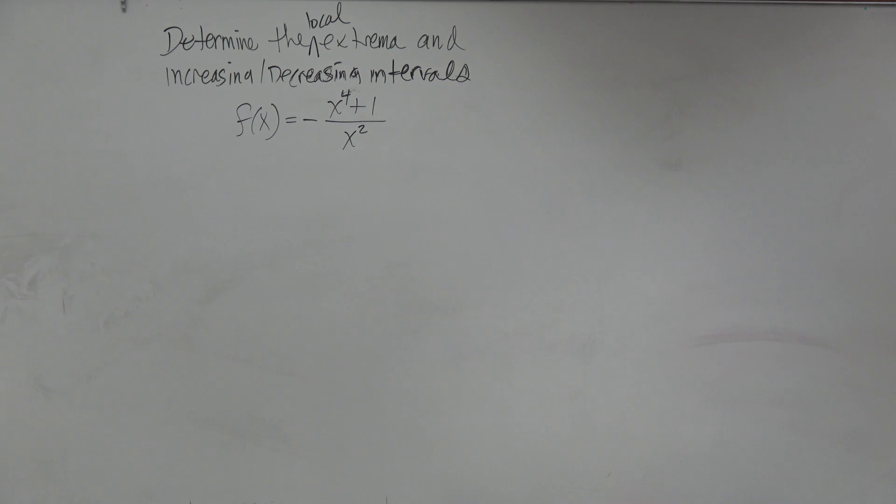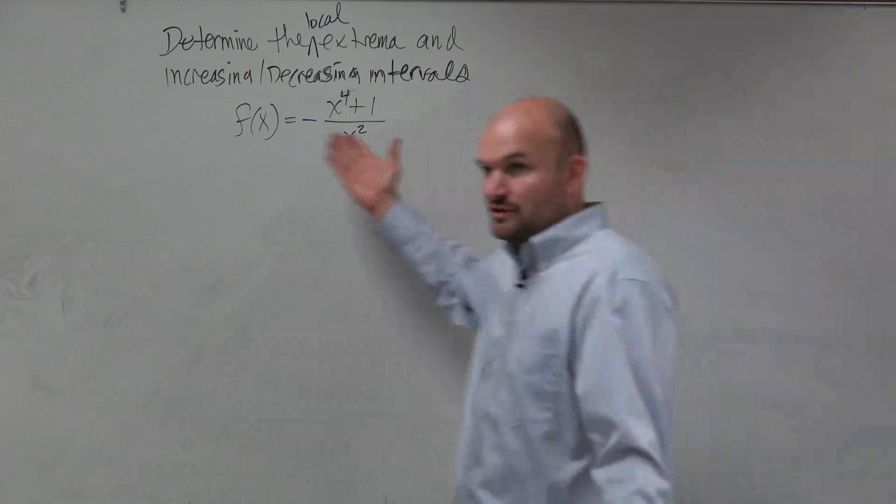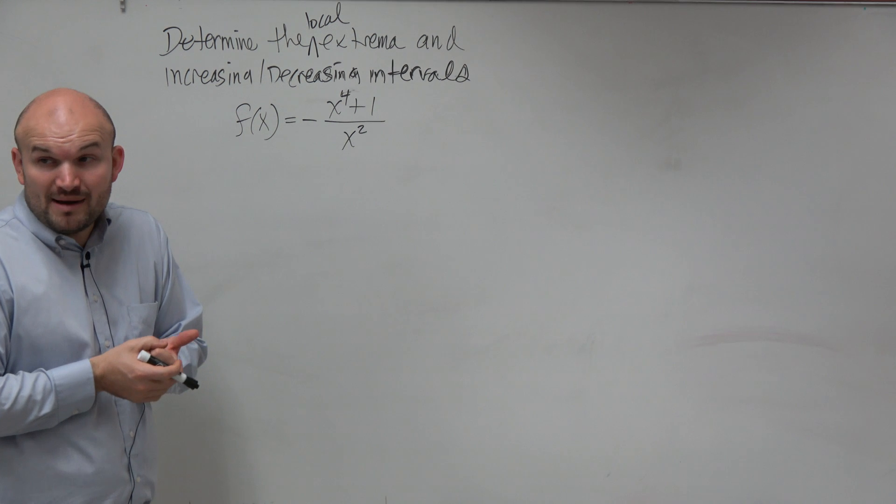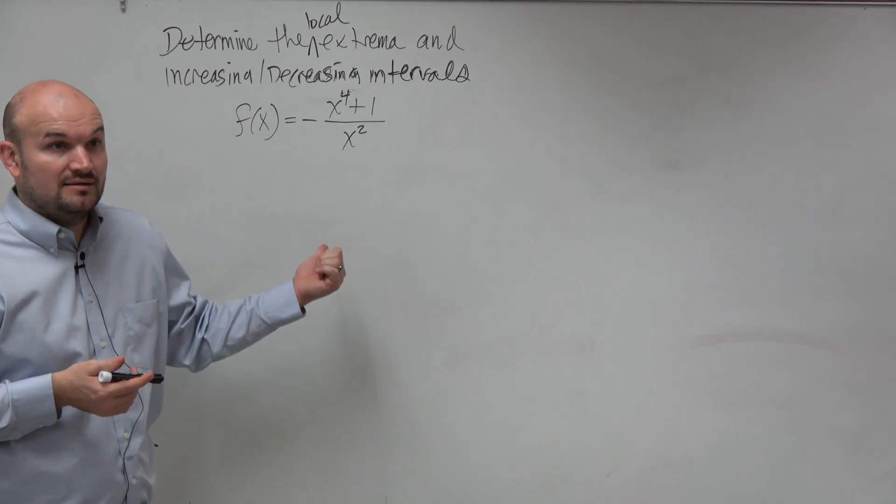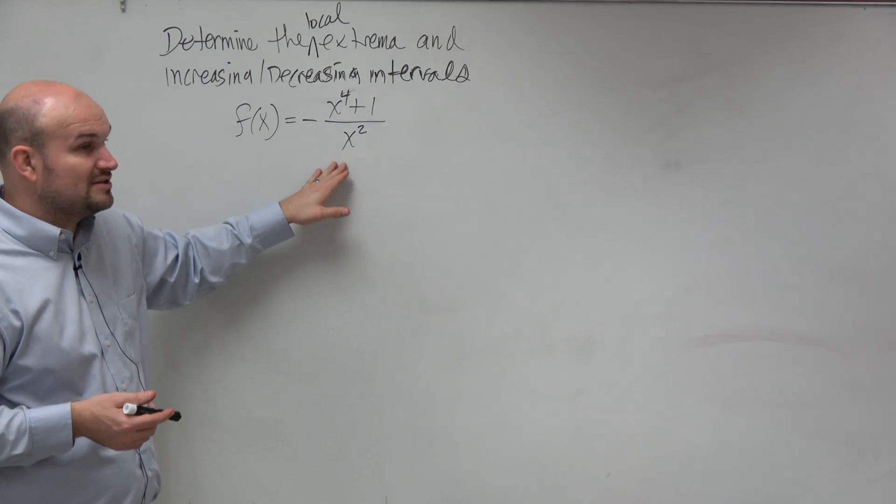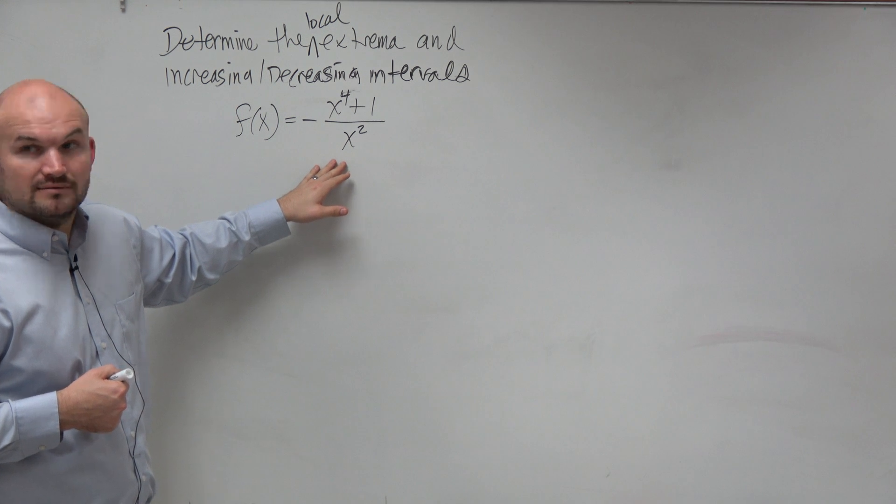So in this example, we do not have a continuous function. That is important, because if we don't have a continuous function, that means we have an asymptote or a hole. Obviously, you guys know that this is an asymptote. But then we don't have a local max or min at that value. It still can be a critical value, but it's not going to be a max or a min.